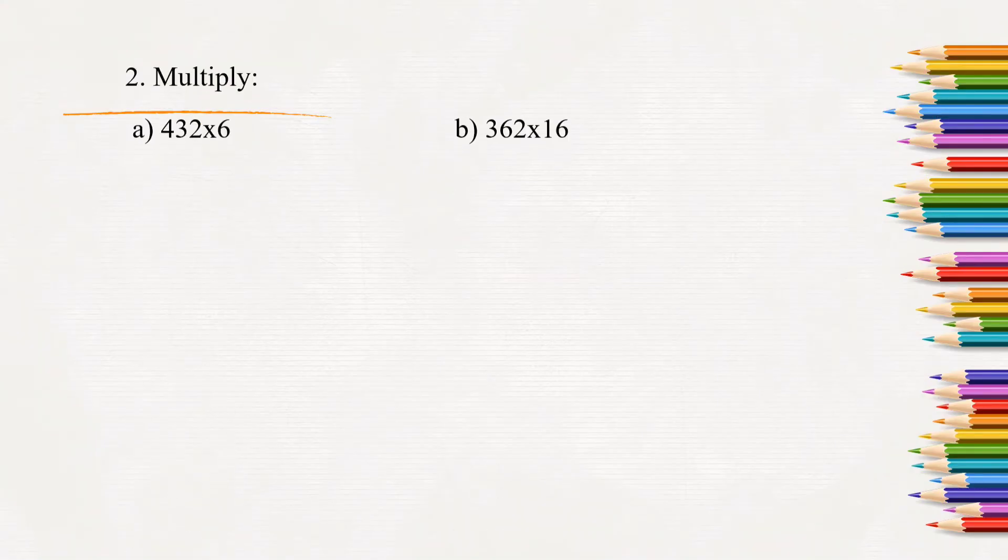Next question: multiply. 432 into 6 we will have to find out. 6 times 2 or 6, 2 times will be 12. So 2 here, 1 carry. 6, 3 times is 18. 18 plus 1 is 19. 9 here, 1 carry. 6, 4 times is 24. 24 plus 1 is 25. Product of 432 into 6 will be 2592.